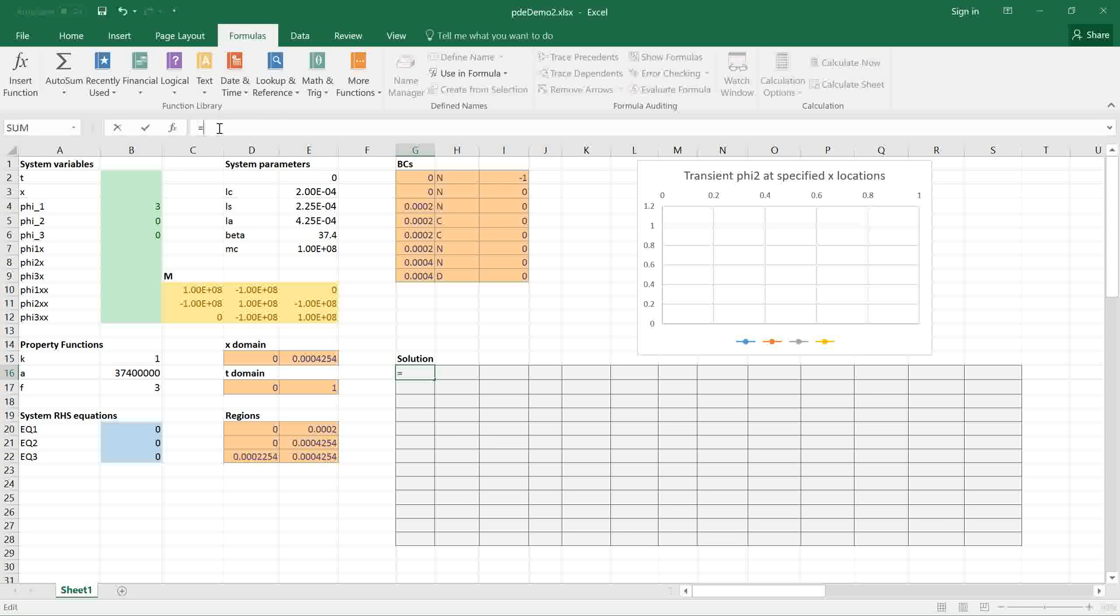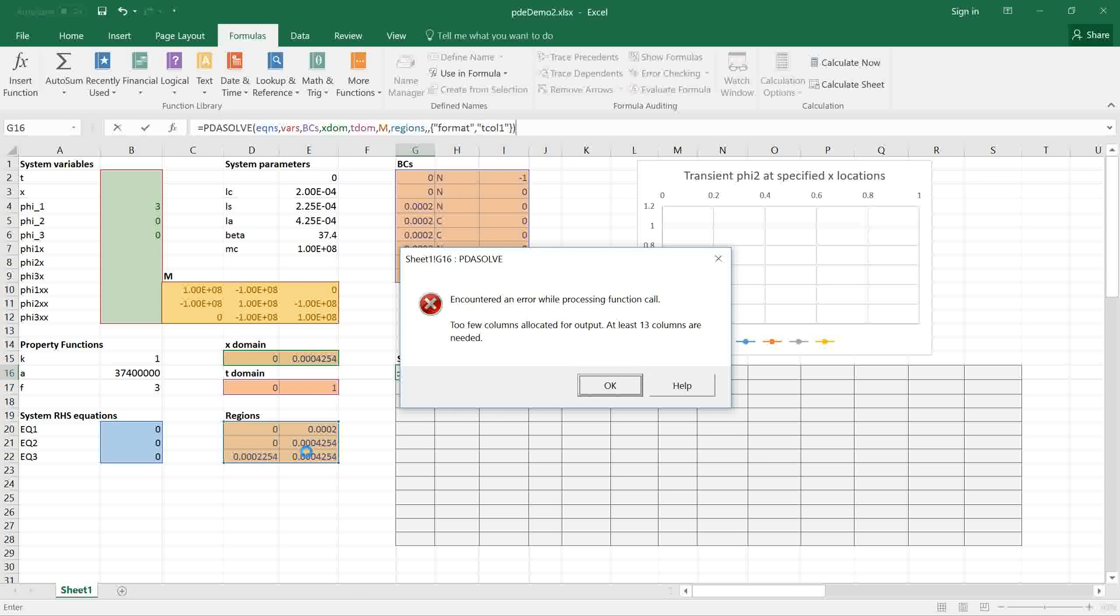I define PDESolve formula. My first argument is my equations, second argument is my variables, third argument is my boundary conditions, fourth argument is my X domain, fifth argument is my T domain, sixth argument is my mass matrix, seventh argument is my regions definition. I'm going to skip the eighth optional argument for the tolerances and jump to the optional control parameters to define a transient format for the solution. I press enter and we get an error message that tells us too few columns are allocated for output. At least 13 columns are needed. So this is an easy way to find the minimum size you need.